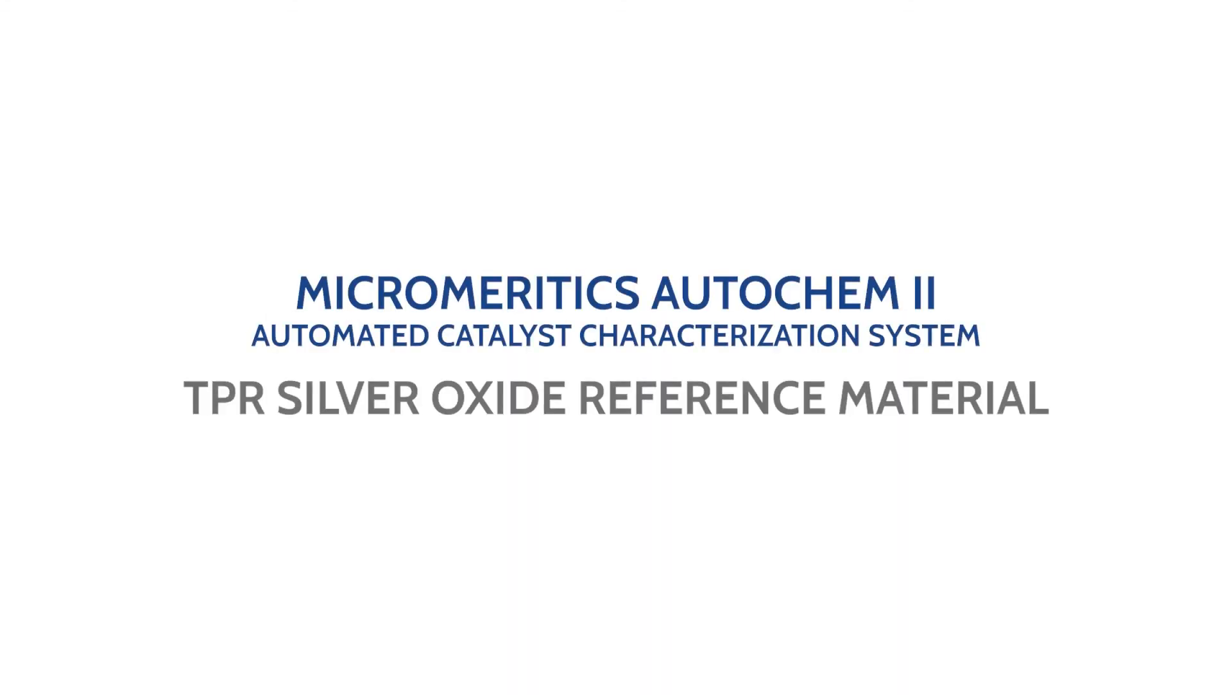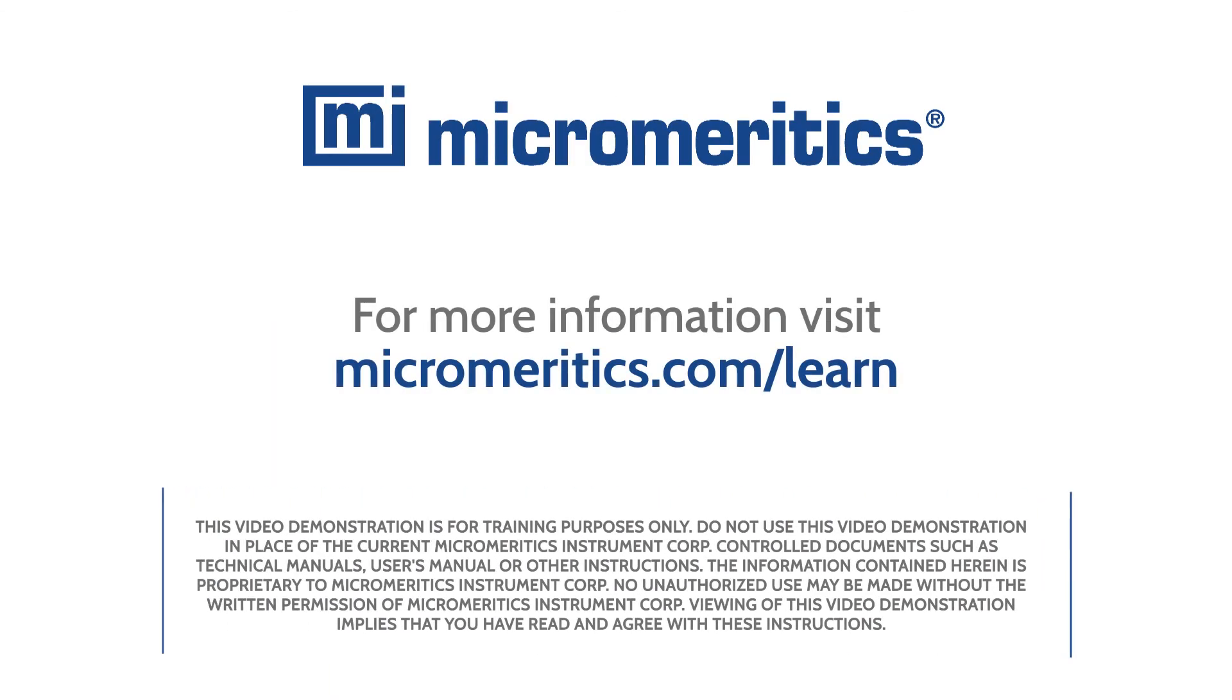And that completes this demonstration on how to run a temperature-programmed reduction with silver oxide reference material on the Micromeridics AutoChem 2 Automated Catalyst Characterization System. For more information, visit micromeridics.com slash learn.